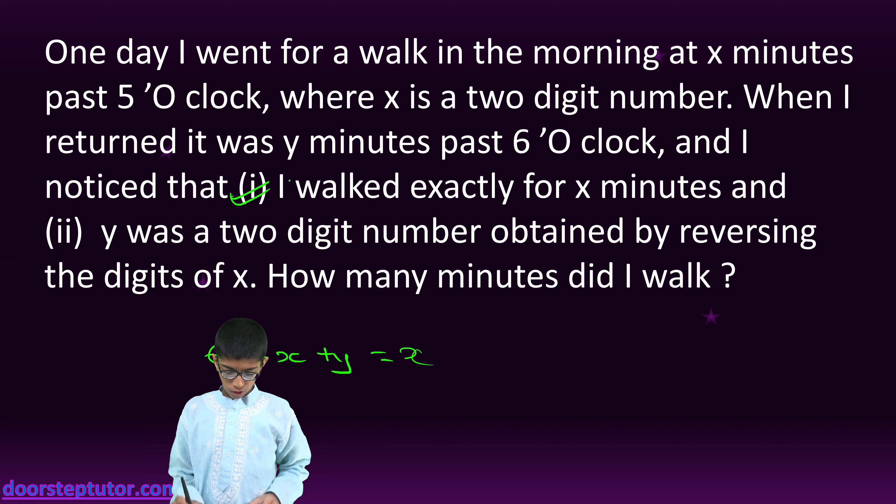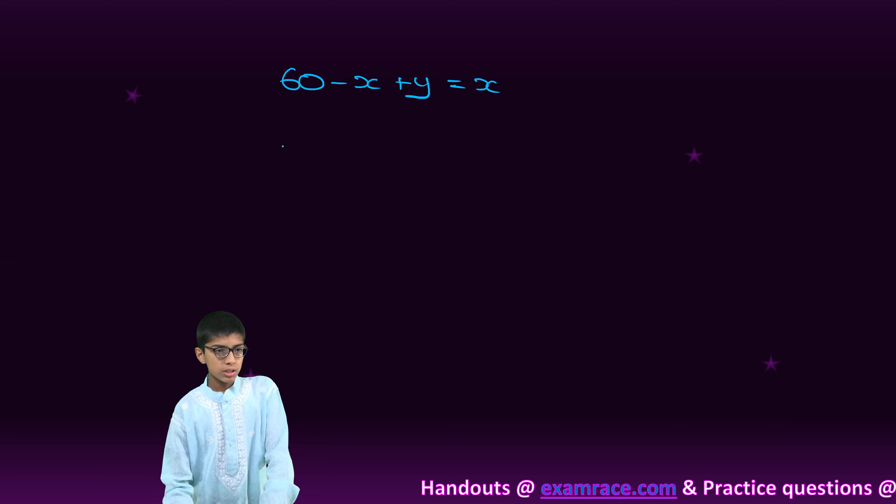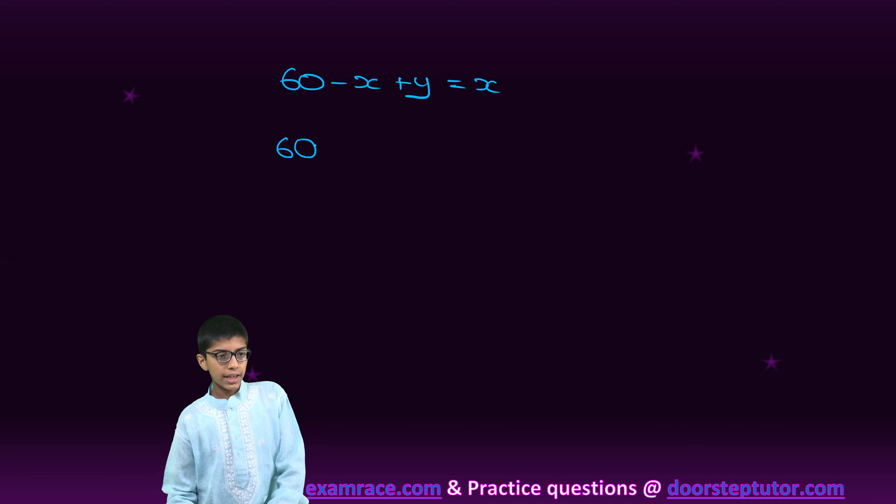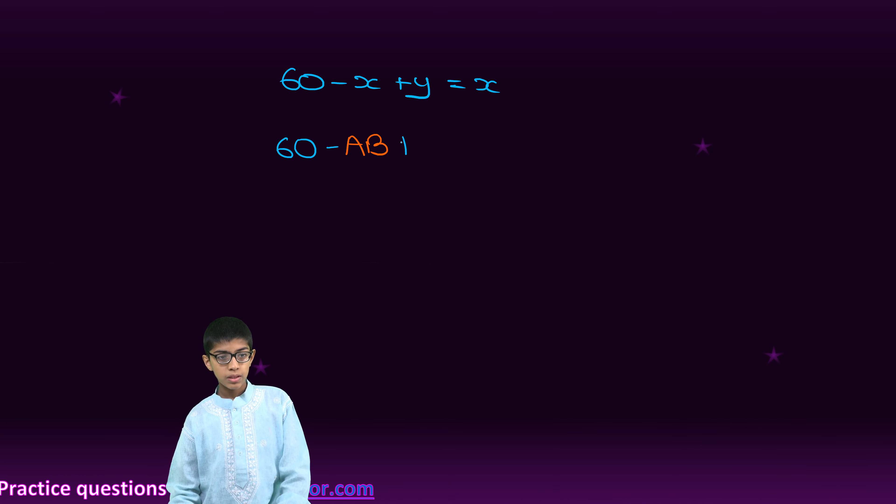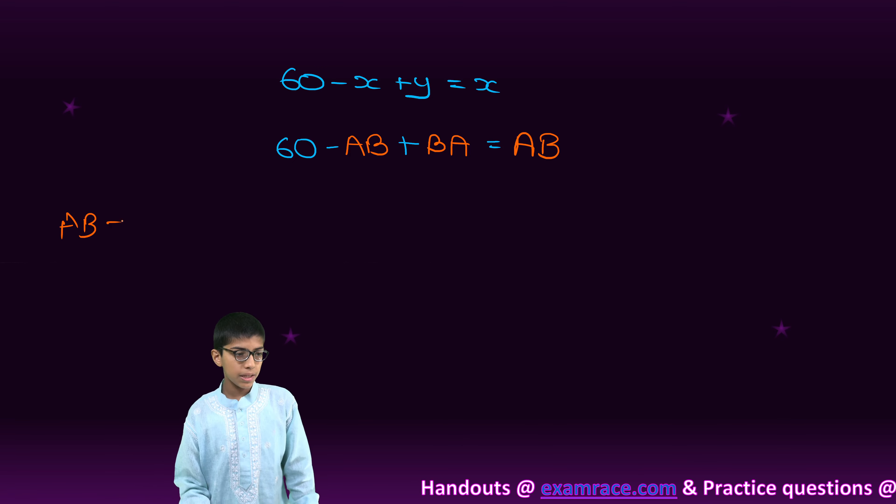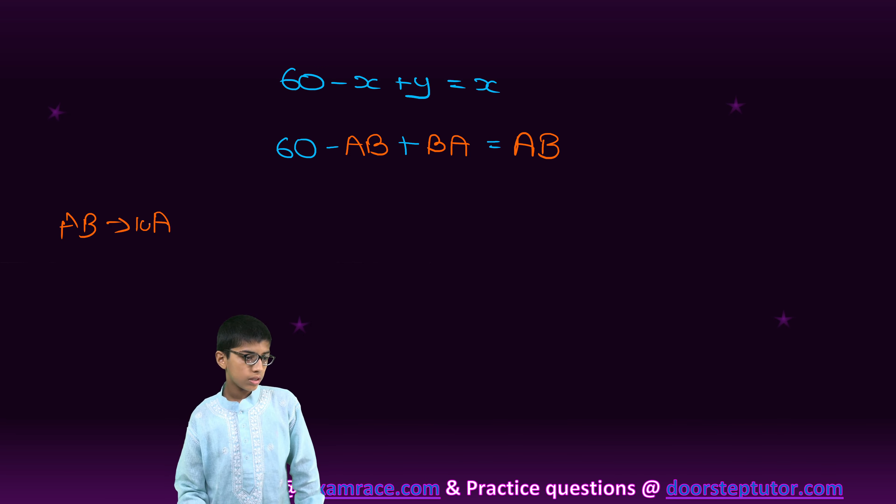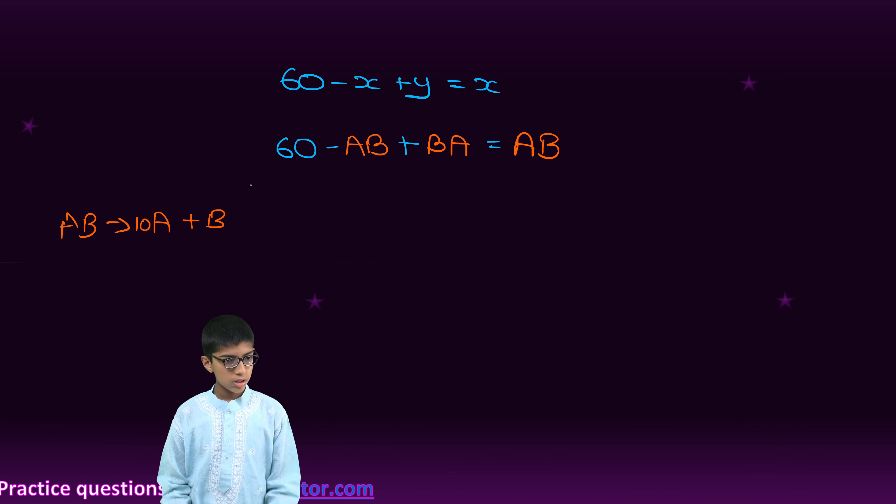Now, when we follow the second condition, we can write this as 60 minus AB plus BA is equal to AB. So, here, AB stands for 10A plus B. As X and Y both are two-digit numbers.